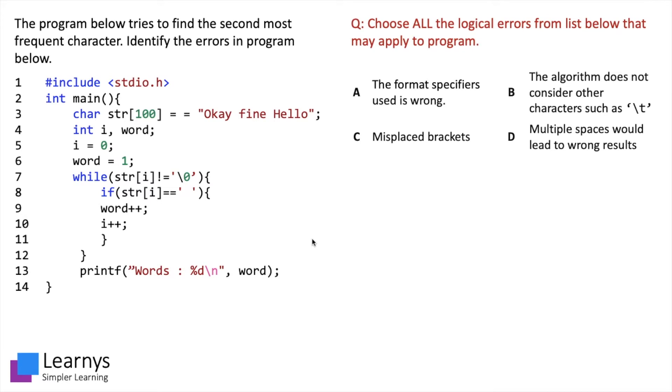Since this program only takes one input, statements one, two, three are correct. At statement number four we are asked to make an integer i and an integer word. Let's assume the first one is i and second one is word. The i is initialized with zero and word is initialized with one.